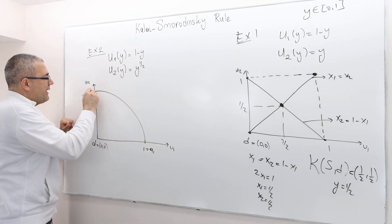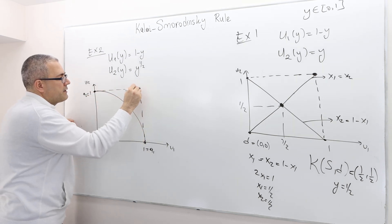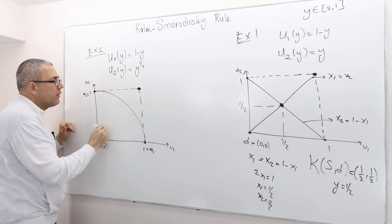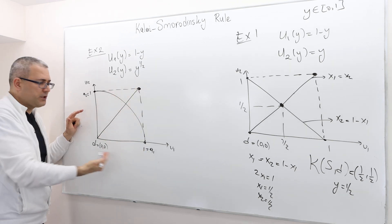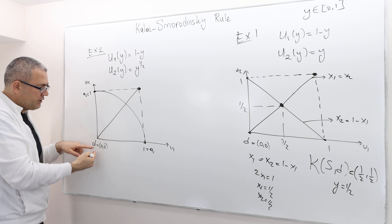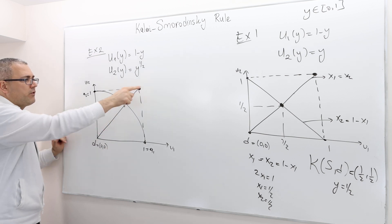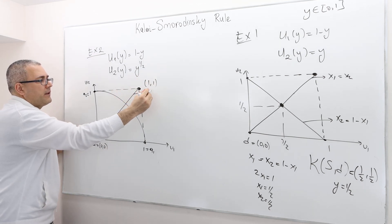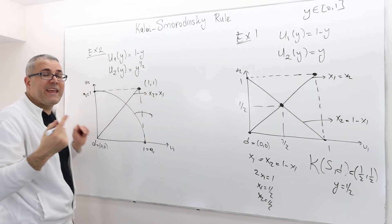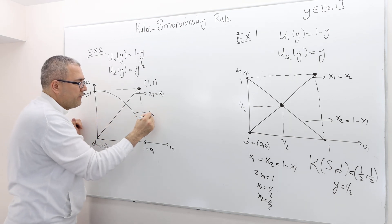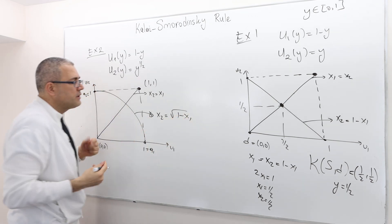What about this problem? Again, remember, these are the aspiration points. We love to give both players that point. It's not feasible. So we're going to pull it. Once again, this is 1, 1. So this is a perfect square. And so this line connecting the origin 0, 0 and this 1, 1 point is nothing but x2 equals x1 line. What about this curve? Remember this curve? We found what this curve is. It was x2 equals square root of square root of 1 minus x1.